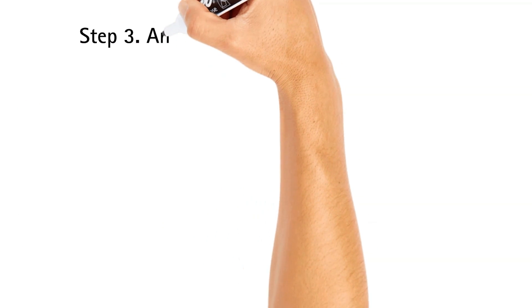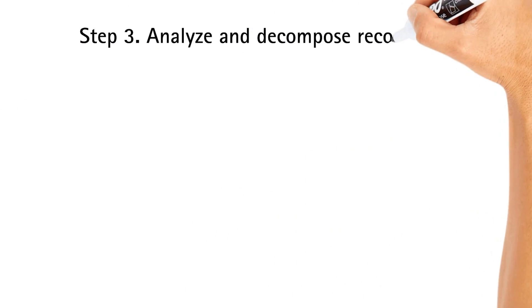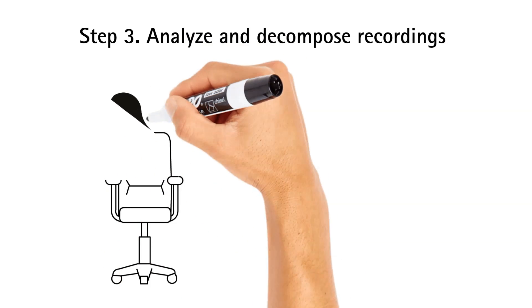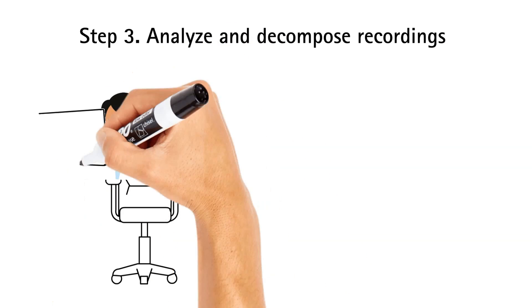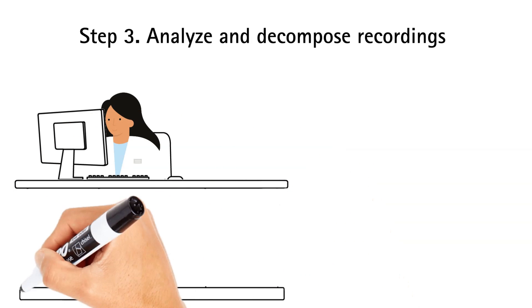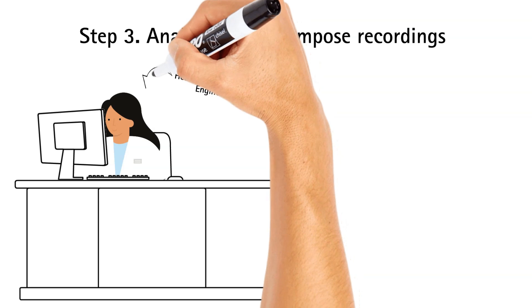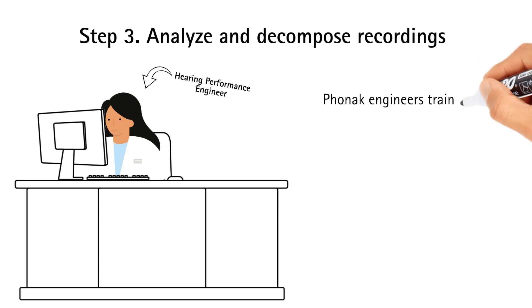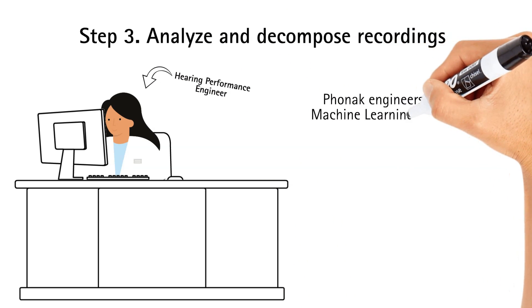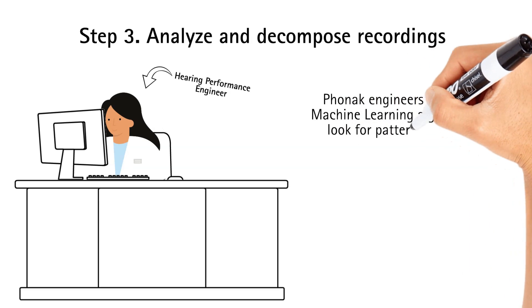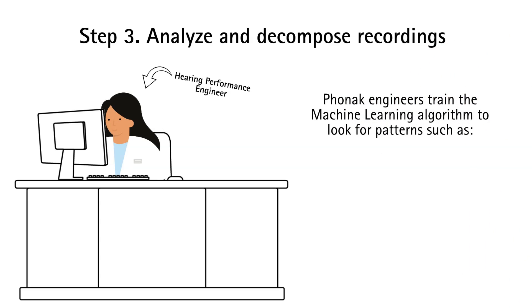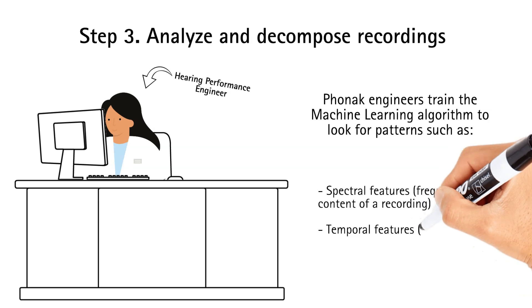Step 3 involves the analysis and decomposition of the recordings. Phonak hearing performance engineers train the machine learning algorithm to discern specific patterns within the audio signals of the recordings, so they can accurately and precisely understand each environment in the recording. These patterns can be spectral or temporal in nature, and help the machine learning algorithm determine each environment captured in the recordings. Spectral patterns indicate the frequency content typical of certain environments, while temporal patterns refer to changes in intensity and dynamics of the sound captured in the recording.